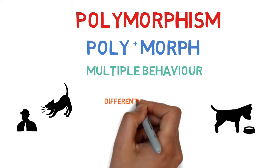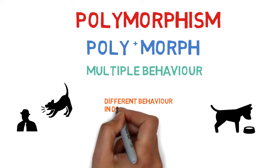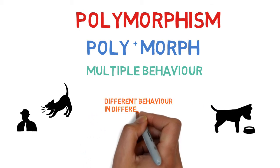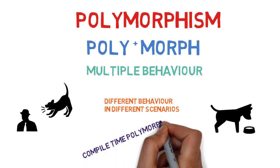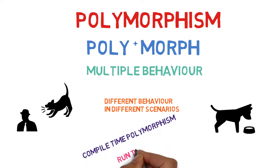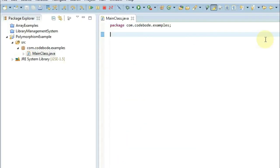Similarly, in programming, when a particular method behaves differently in different scenarios, we call it polymorphism. There are two types of polymorphism: compile time and runtime. First we'll see compile time polymorphism, after which we'll see runtime polymorphism.